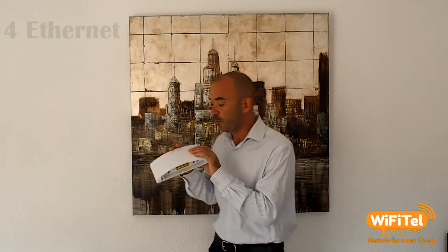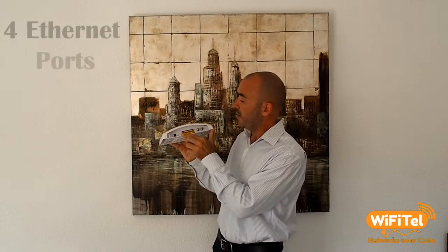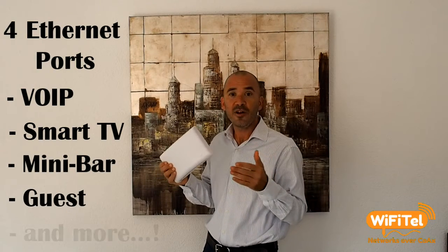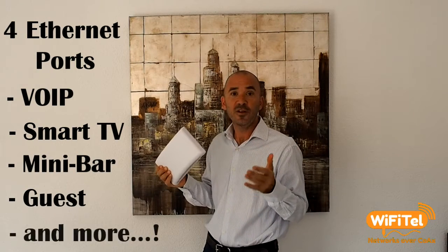Each access point has four ports, which can be used to provide all sorts of other ethernet services to the room, whether it is running a VoIP phone system, connecting to a smart TV, a smart mini fridge, a guest wired ethernet connection, or any other ancillary service you wish to provide in that room.